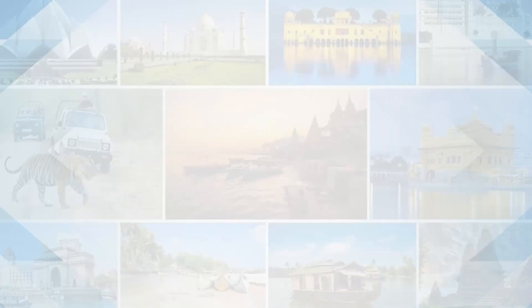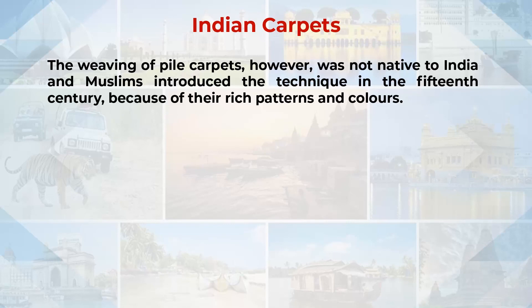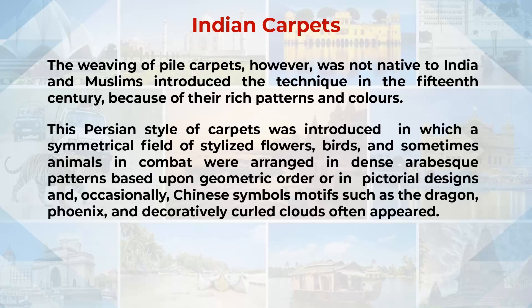The other handicraft to discuss is Indian carpets. The weaving of pile carpets was not native to India; Muslims introduced the technique in the 15th century. Because of the rich patterns and colors, a Persian style of carpets was introduced in which a symmetrical field of stylized flowers, birds and sometimes animals in combat were arranged in dense arabesque patterns based on geometric order or picturesque designs. Occasionally, Chinese symbol motifs such as the dragon, the phoenix and decorative birds and clouds were also incorporated.